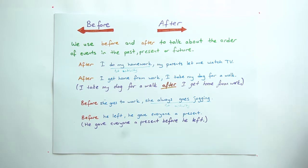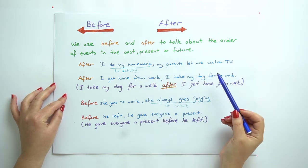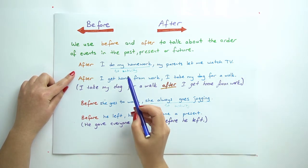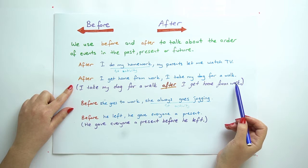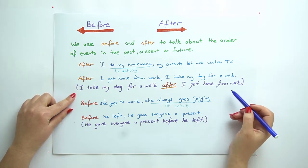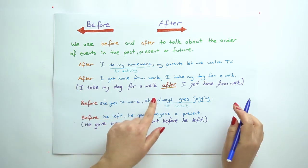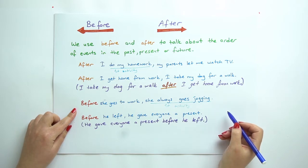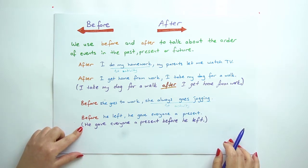And now we have linking words here: after, before, and when. We use before and after to talk about the order of events in the past, present, or future. After: after I do my homework, my parents let me watch TV. The first action is doing homework. Another example: after I get home from work, I take my dog for a walk. Before she goes to work, she always goes jogging. The first action is going jogging here.